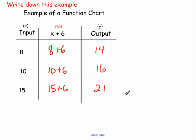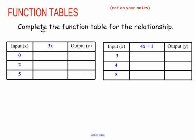Go ahead and make sure and write down that example. Pause the video if you need to. Here's a couple of examples — these are not in your notes, but if you want to write them there's plenty of room. My input values are 0, 2, and 5, so I'm just going to plug those in for x. 3 times 0 would be 0. 3 times 2 would be 6. And 3 times 5 would be 15. All I'm doing is plugging in for that x value.